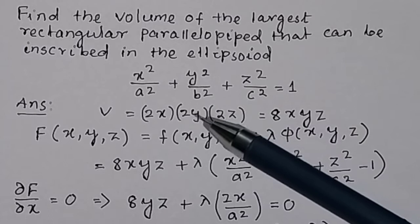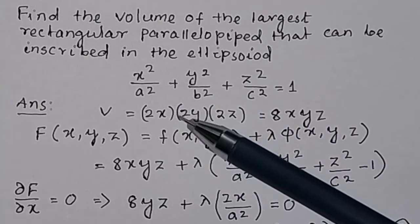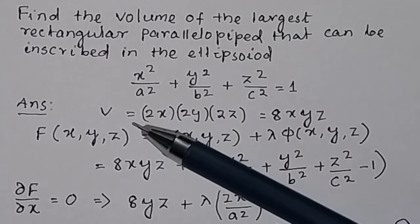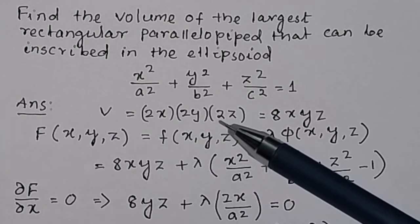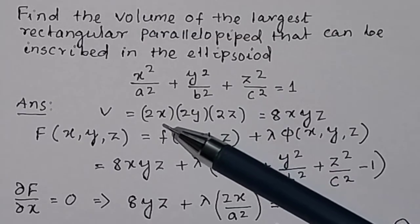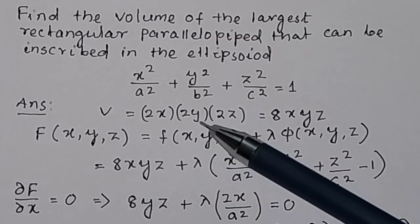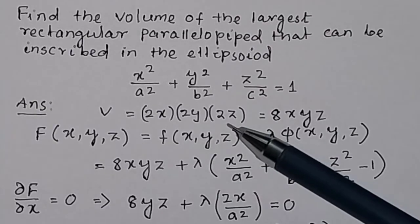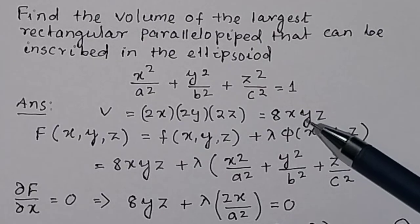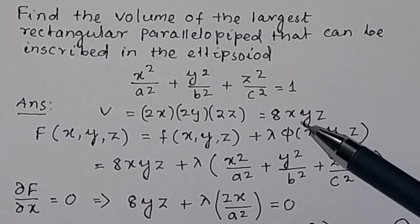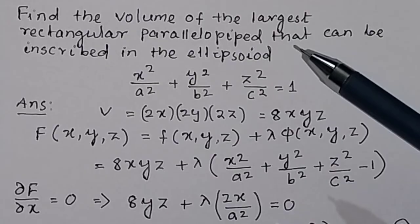We know the volume of a rectangular parallelepiped is given by V = 2x × 2y × 2z, where 2x is the total length, 2y is the breadth, and 2z is the height. So the volume is given by the formula 8xyz.